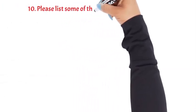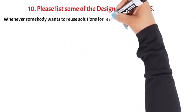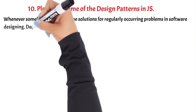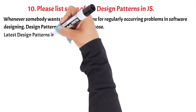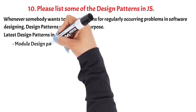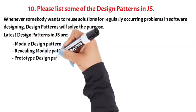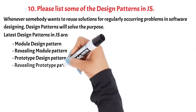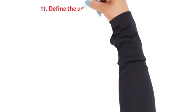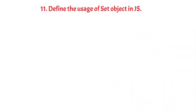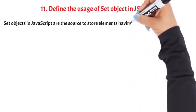Question 10: Please list some of the design patterns in JS. Whenever somebody wants to reuse solutions for regularly occurring problems in software design, design patterns solve the purpose. The latest design patterns in JS include: Module design pattern, Revealing module pattern, Prototype design pattern, Revealing prototype pattern, Observer design pattern, and Singleton. Question 11: To find the usage of the Set object in JS — Set objects in JavaScript are used to store elements having unique values, including both primitive and object reference values.